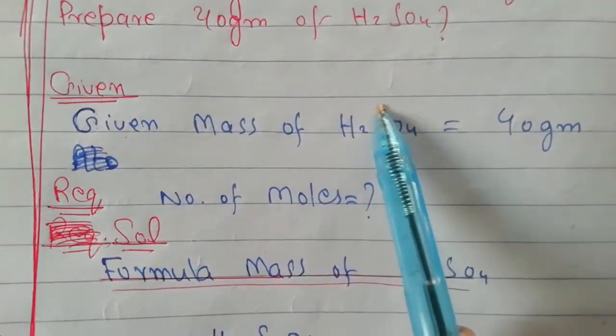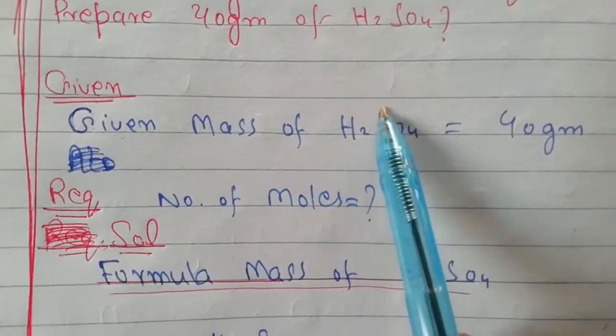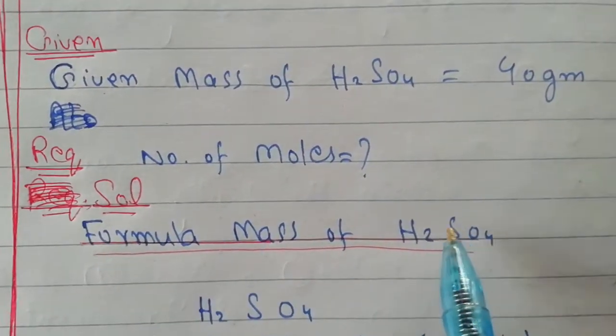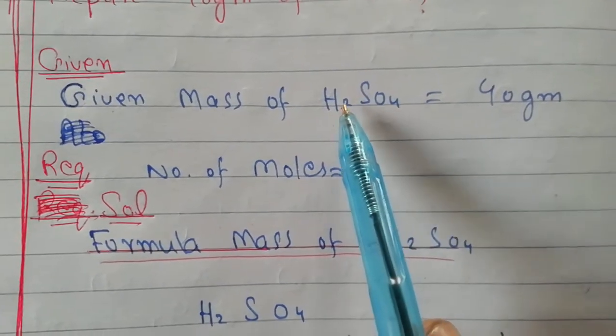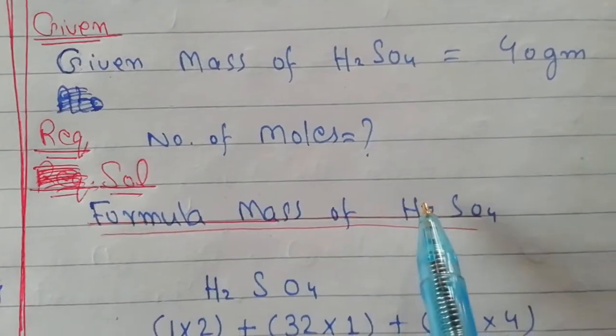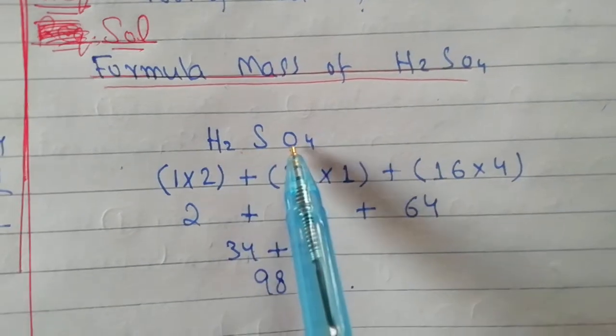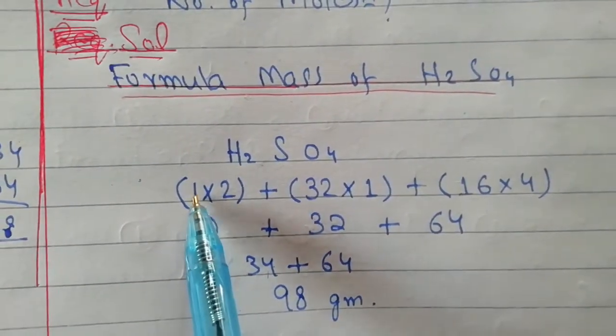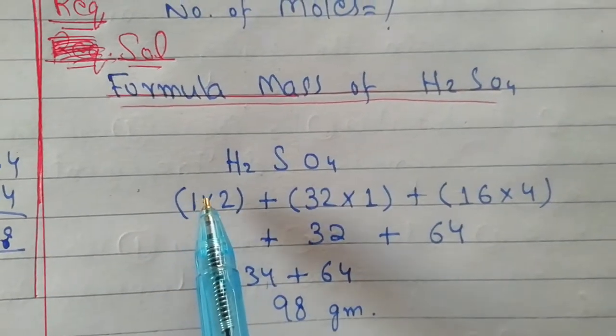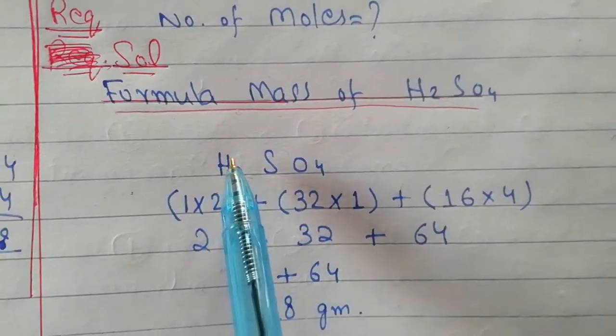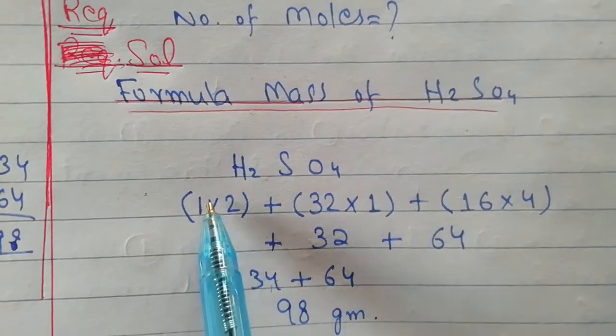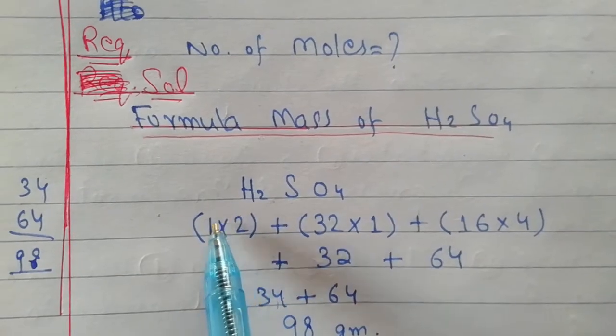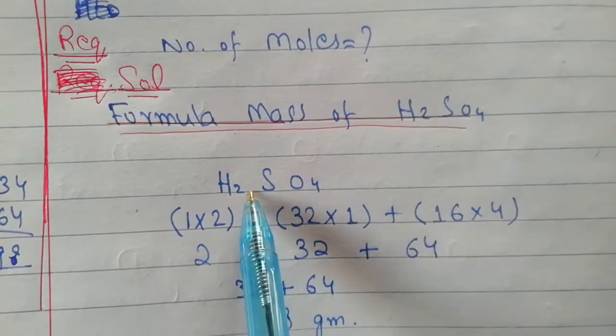First of all, formula of sulfuric acid which is H₂SO₄. In here, hydrogen atom atomic mass is 1. So 1 multiplied by 2 equals 2.